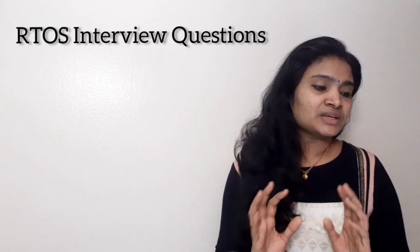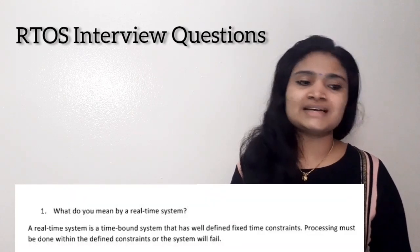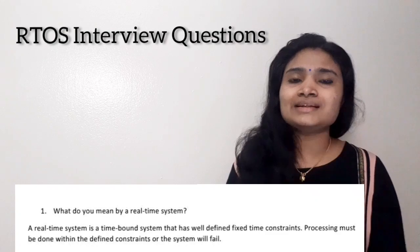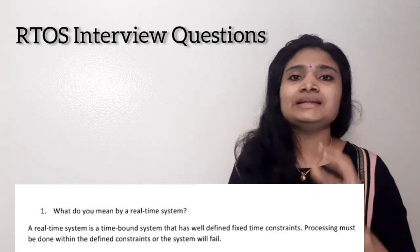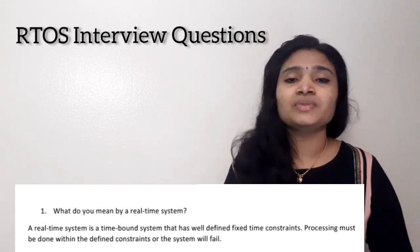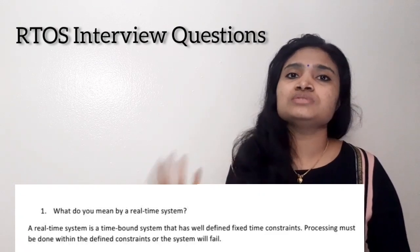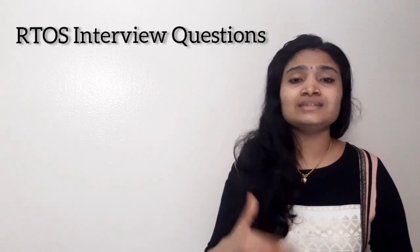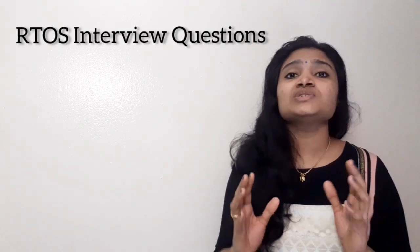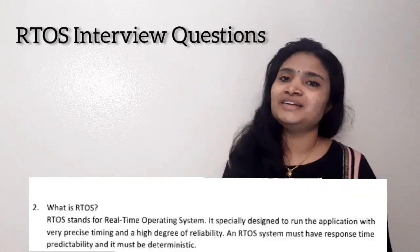The first question is: what do you mean by a real-time system? There are generally two types of systems — general systems and real-time systems. A real-time system gives importance to time constraints. A system that works within certain time constraints is called a real-time system. It checks whether the system is completing its operation within the deadline, and if the deadline is missed, some failures or problems will occur.